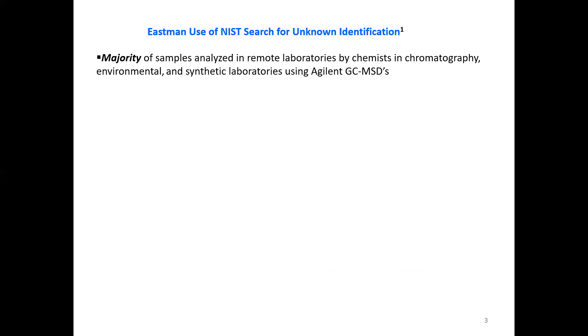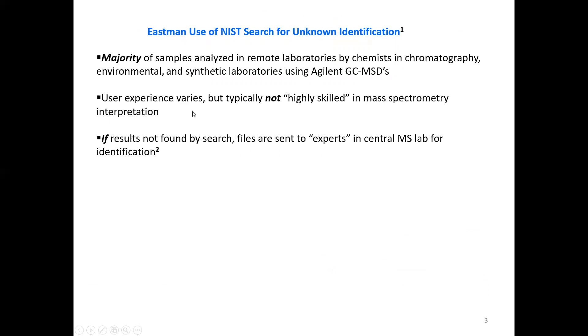Majority of the samples analyzed in remote laboratories by chemists and chromatography, environmental and synthetic laboratories using Agilent GCMSDs. The user experience varies, but typically they're not highly skilled in mass spectrometry interpretation. If results are not found by the NIST search, files are sent to experts in our central mass spec lab for identification. Experts report these results promptly via email and add them to our corporate library when identified.